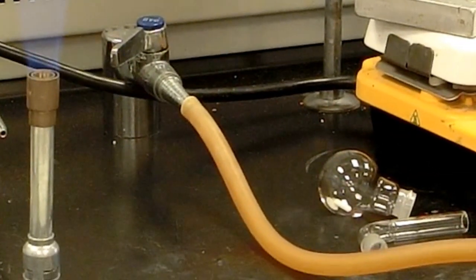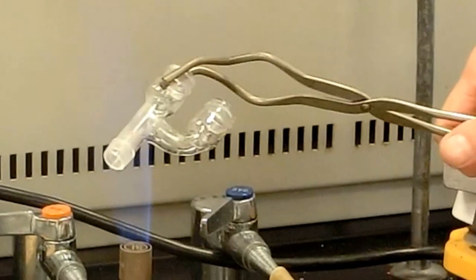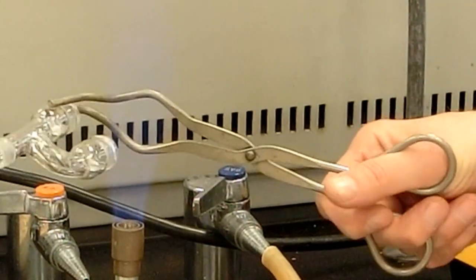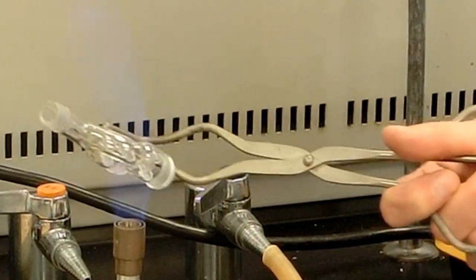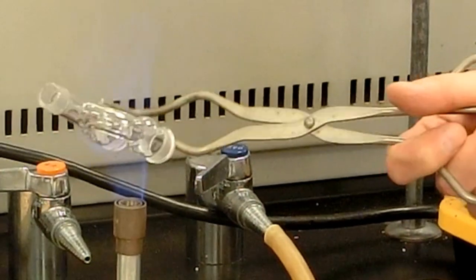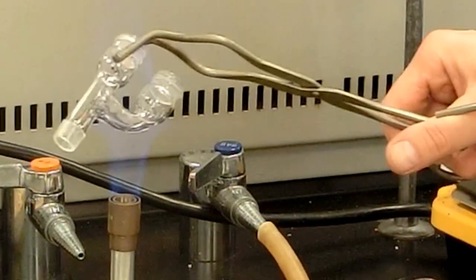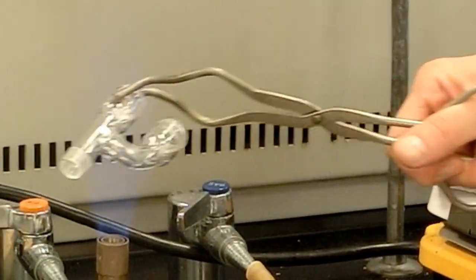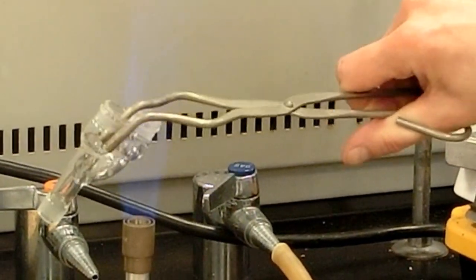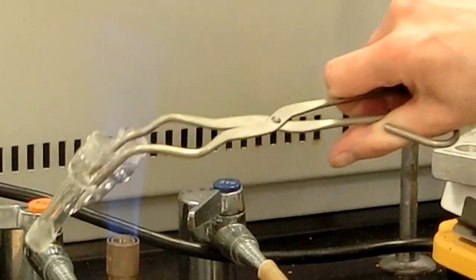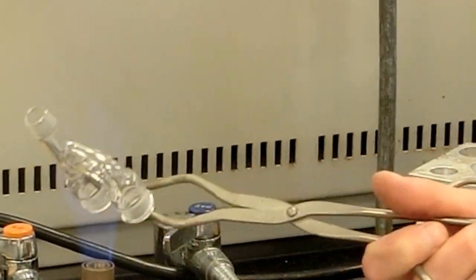And now the Claisen condenser. Torch this really well. And everything, at this point, when you flame dry, of course, you do not want your ether solvent anywhere near the flame. The ether fumes can travel quite a distance and ignite, and so when we have the flame out, we want the ether sealed up and put away. It's probably the biggest safety concern in this lab.